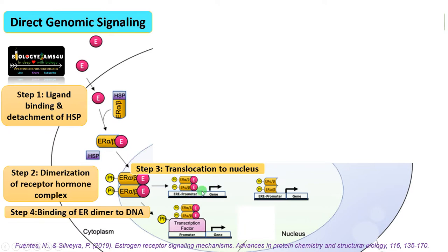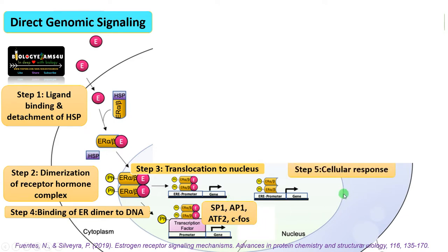In step four, this estrogen receptor dimer binds to the estrogen response element (ERE), a specific conserved DNA sequence close to the promoter. In some cases, this dimer binds to transcription factors like stimulating protein 1, AP1, ATF2, C4C, Jun, etc., and is not directly binding to the promoter or ERE. In both cases, this binding activates expression of associated genes mediated by estrogen signaling, finally causing a cellular response such as cell division or differentiation.